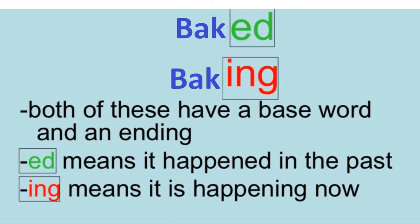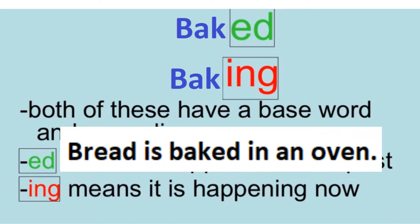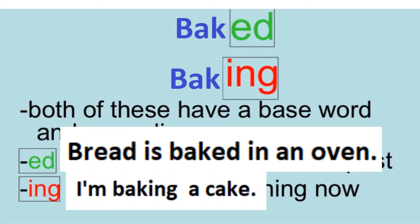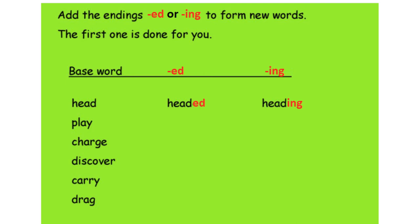Base word دونوں میں ایک ہی ہے، لیکن ایک میں -ed کی ending ہے یعنی past tense، اور دوسرا happening now — مौجودہ زمانے میں۔ Sentences یوں بنیں گے: 'Bread is baked in an oven' — جو bread ہوتی ہے وہ oven میں پکائی جاتی ہے، اور 'I am baking a cake' — میں ایک cake bake کر رہا ہوں۔ अब exercise: Add the endings -ed or -ing to form new words. The first one is done for you — base word 'head': headed, heading۔